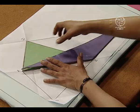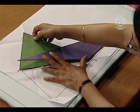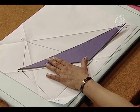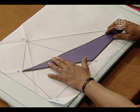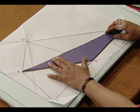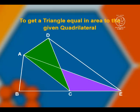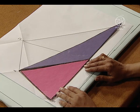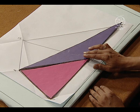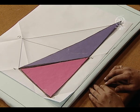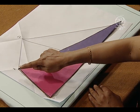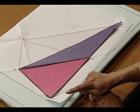Now, we remove the cut-out of triangle ADC and replace it with the triangular cut-out AEC as it is, then we add on the cut-out of triangle ABC. These two combined cut-outs form triangle ABE.